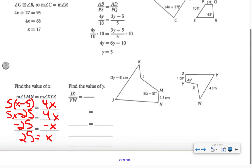When I find the value of Y, I'm using that JK is to VW as MN is to YZ. I'm taking all of that and plugging it into the proportion. So JK is 2Y minus 8 over VW, which is 4, equals MN, which is 1.5, over the length of YZ, which is 1.